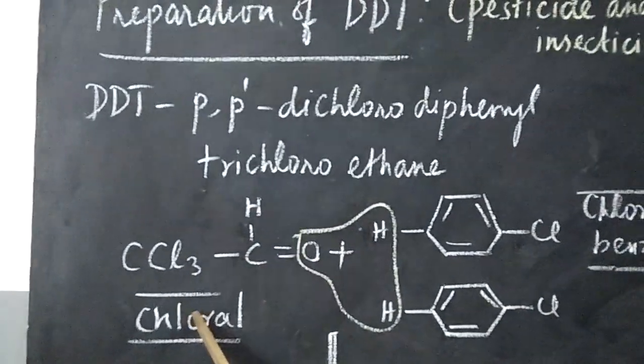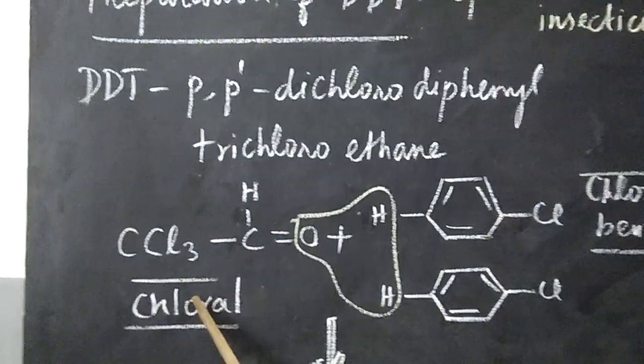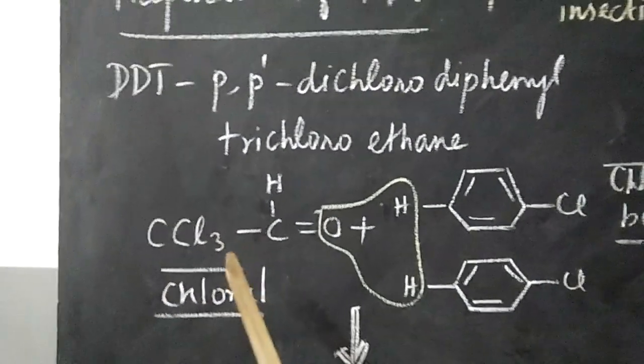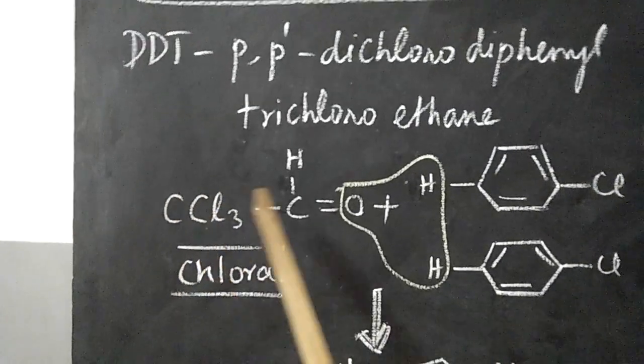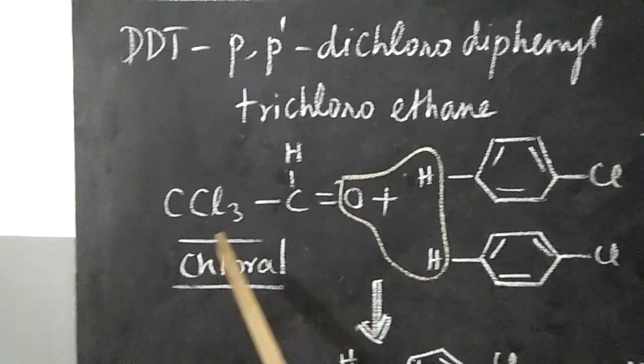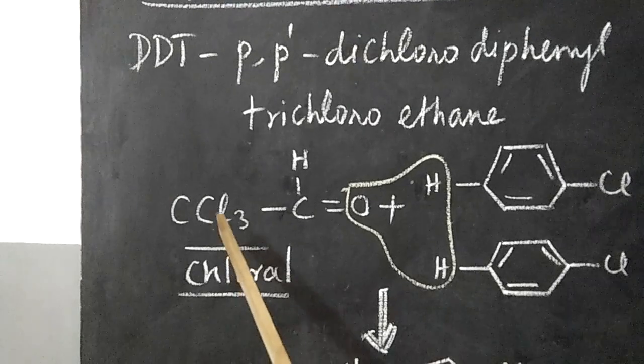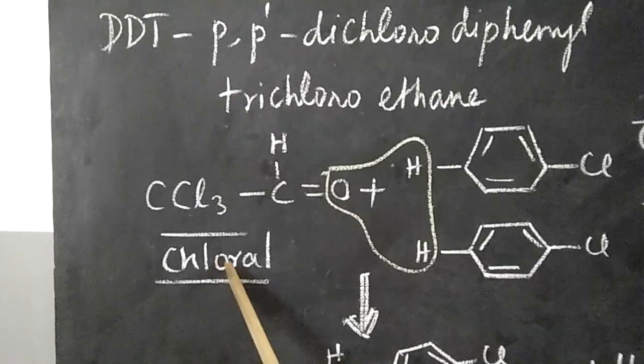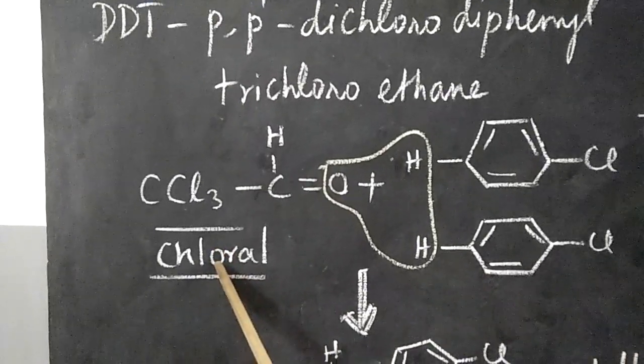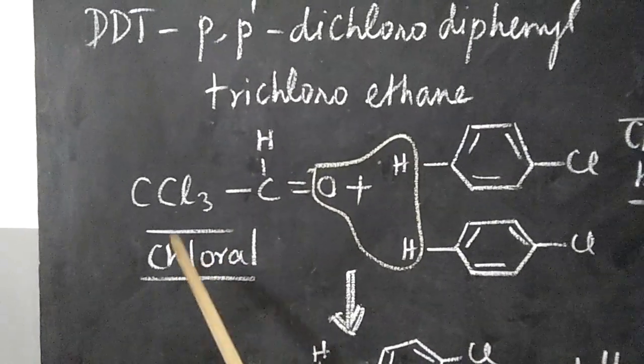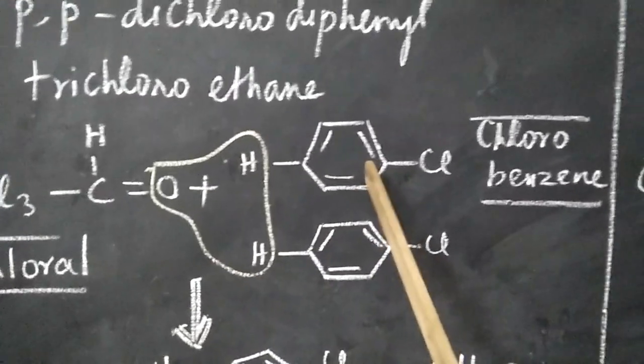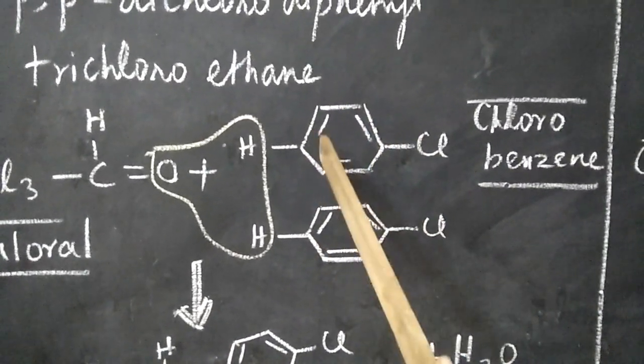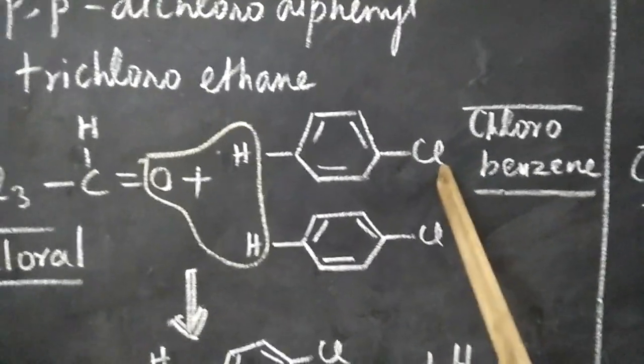This compound is chloral. Chloral is trichloroacetaldehyde. Acetaldehyde is CH3CHO. Here instead of 3 hydrogen atoms, you have 3 chlorine atoms, so it is called trichloroacetaldehyde. The name is chloral for trichloroacetaldehyde. And this compound is chlorobenzene. To the benzene ring, I have written it in a flat way, chlorine atom is attached.